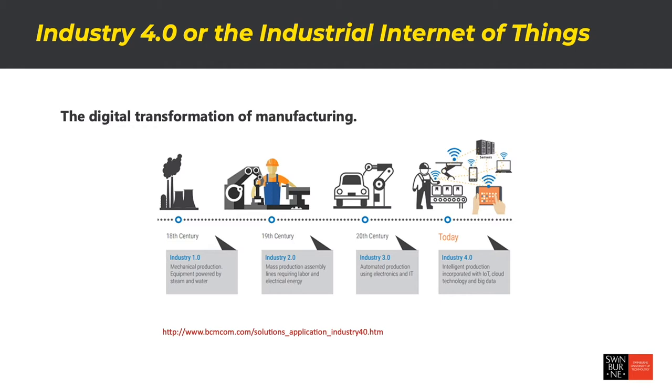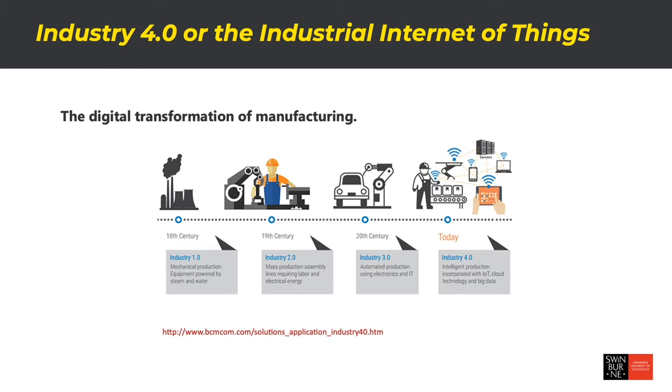The Third Industrial Revolution — my common image for this is thinking about Homer Simpson at the nuclear power plant control panel — where he's using robotics, automation, and computer-controlled systems. The Fourth Industrial Revolution builds on all three previous industrial revolutions and adds the extra element of digitalisation, which means we can create smart, interconnected, and self-correcting manufacturing processes.